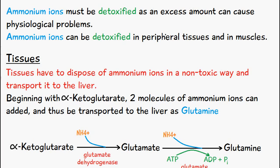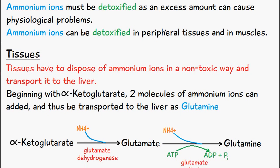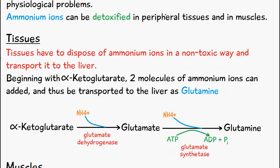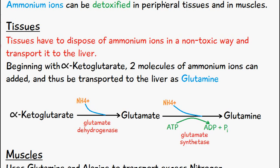Ammonium ions must be detoxified as an excess amount can cause physiological problems. Ammonium ions can be detoxified in peripheral tissues and in muscles. In the tissues, the tissues have to dispose of ammonium ions in a non-toxic way and transport them to the liver.